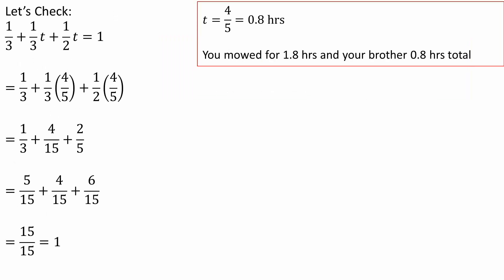We can always check. Let's say I do this: 1/3 + 1/3t + 1/2t = 1, meaning a complete lawn. One-third because we already worked for one hour at a rate of 1/3 per hour, so we already achieved one-third. When we solved this problem in the last slide,